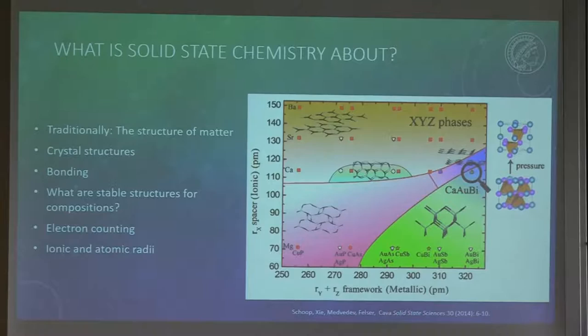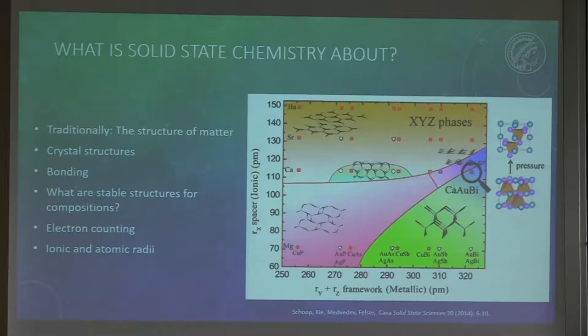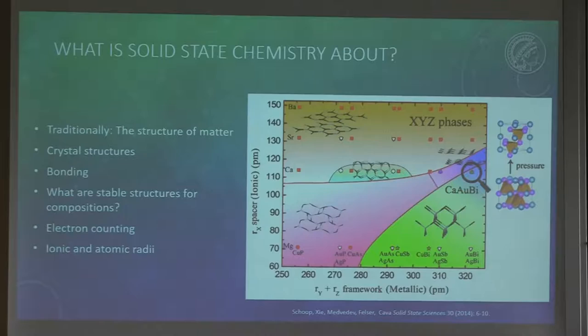I want to give a general introduction first about what solid state chemistry is about. Traditionally, solid state chemistry thinks about crystal structure - the arrangement of matter. If you have a certain set of elements, how do they combine to form a set of crystal structures? And can we find any rules for when a certain structure type is adopted? This often depends on trends we find in the periodic table, like atomic or ionic radii, or also on electron counting.